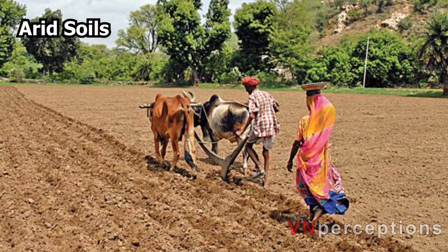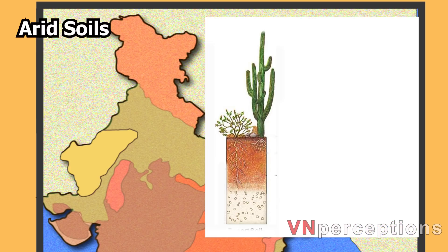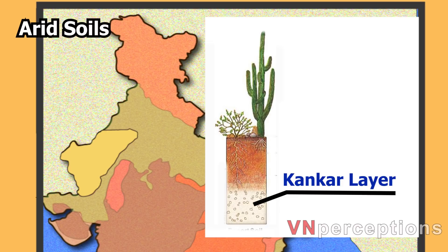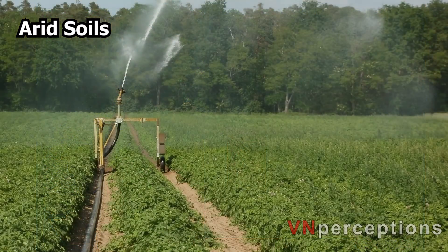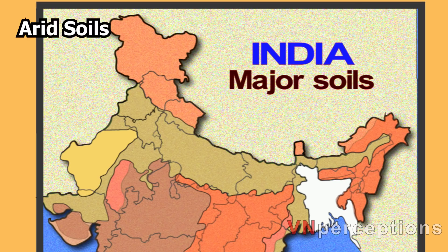These soils exhibit poorly developed horizons. Plants are widely spaced and chemical weathering is limited. Lower horizons are occupied by a kankar layer because of increasing calcium content downwards. This kankar layer formation in the bottom horizon restricts the infiltration of water. However, when irrigation is made available, soil moisture is readily available for sustainable plant growth. The layer of calcium plays a very important role in retaining water.